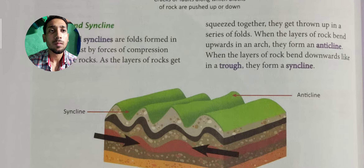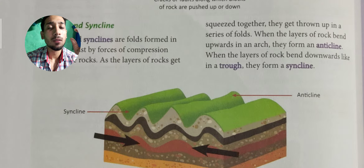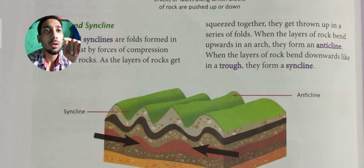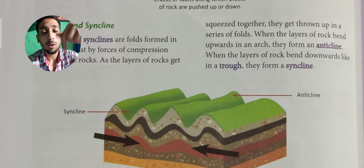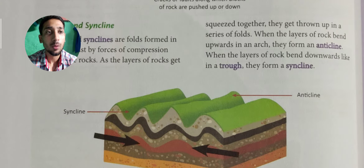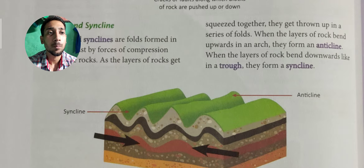When the layer of rock bends upward in an arch, it forms an anticline. So after compression, if the layer folds to make an upward arch, that is called an anticline. When the fold bends downward — like a horizontal downward curve — that downward arch is called a syncline.